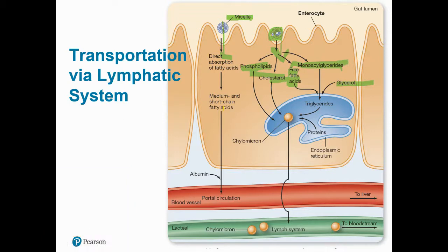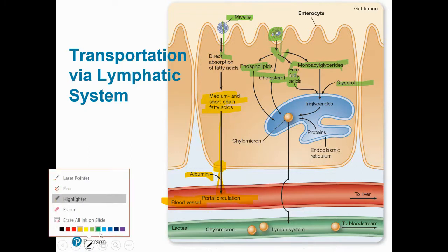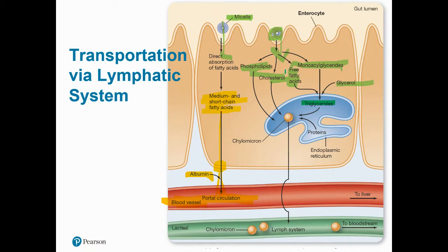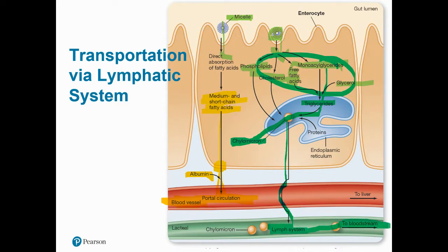The short and medium chain fatty acids can be absorbed directly into the blood — they don't go into lymph. Albumin is a transport protein that helps transport these short and medium chain fatty acids from the enterocyte to the blood. All the other components — longer chain fatty acids, cholesterol remnants, phospholipids, monoglycerides, and glycerols — package up into a chylomicron and get absorbed into the lymph, which will eventually drain into the blood. We will revisit chylomicrons when we talk about cardiovascular disease later in this lecture.